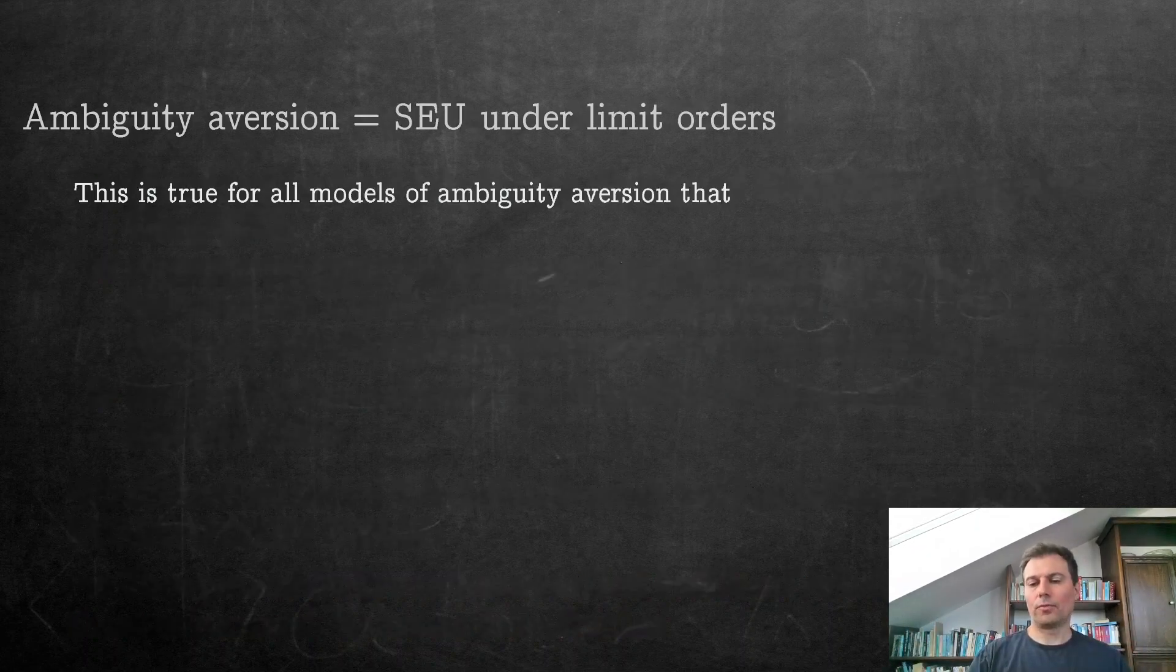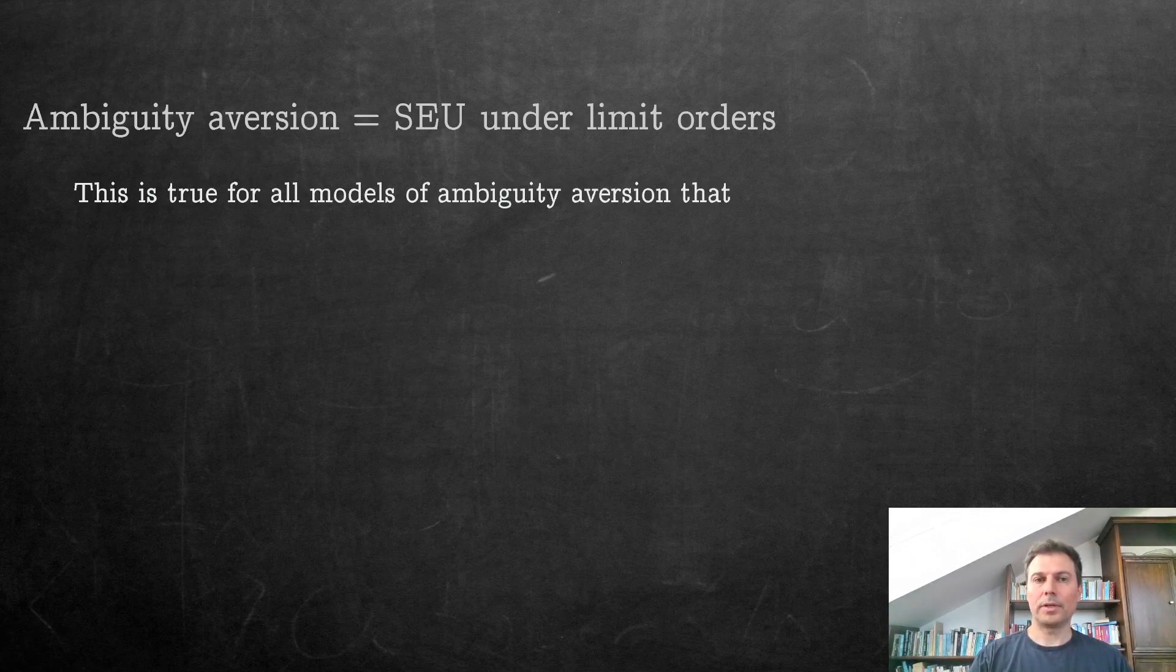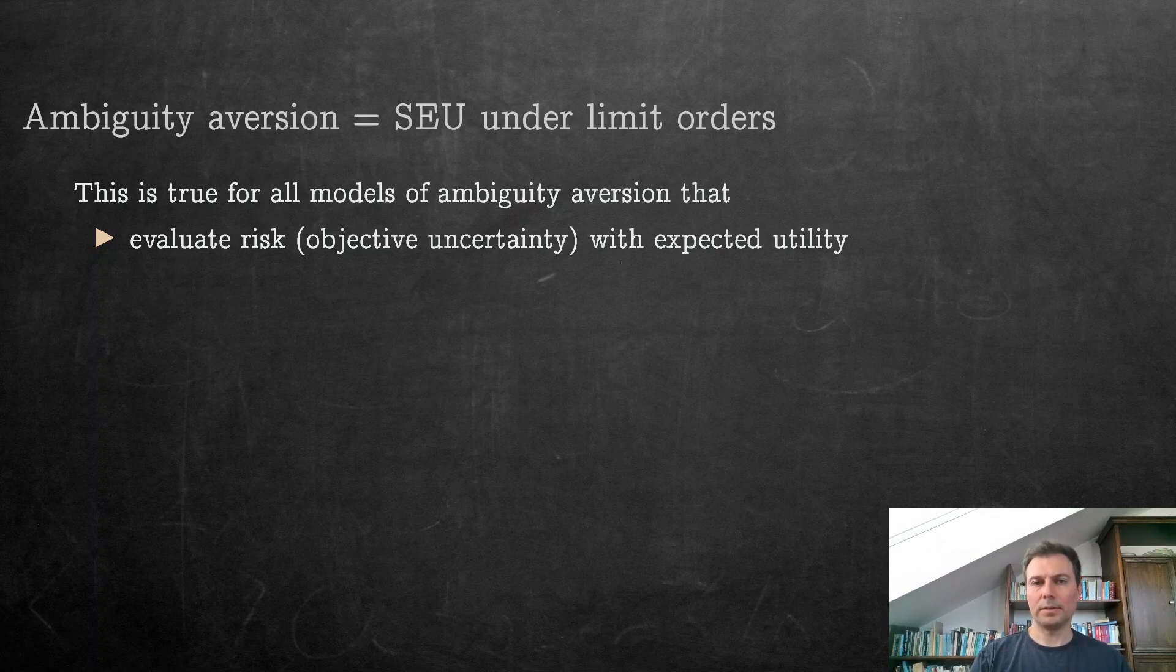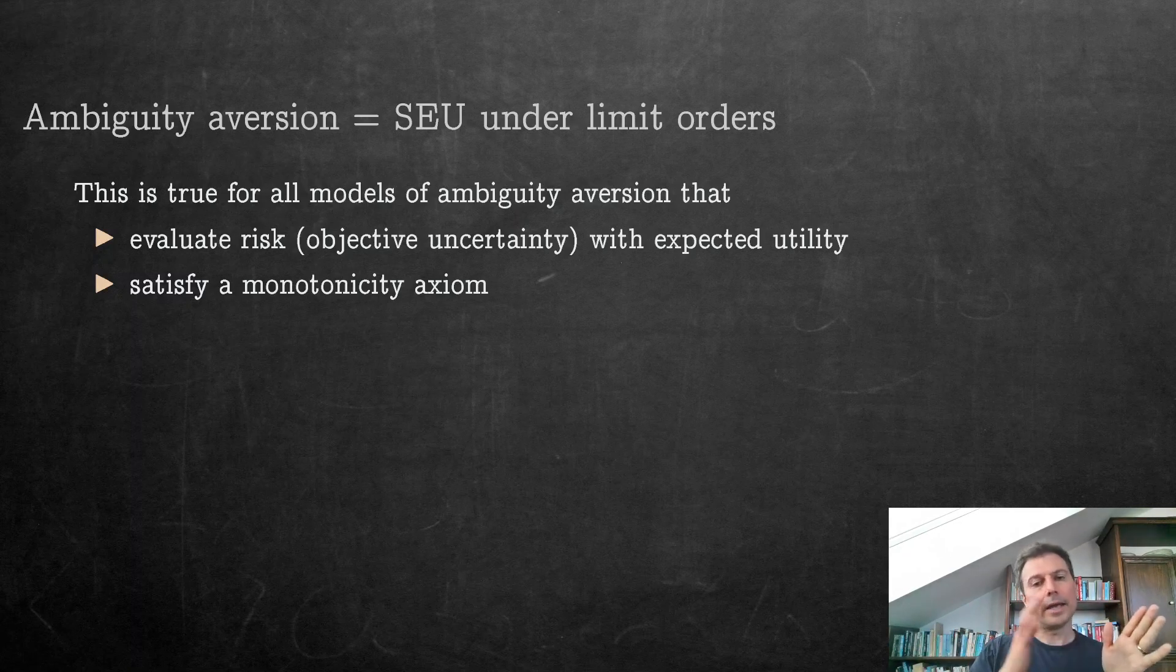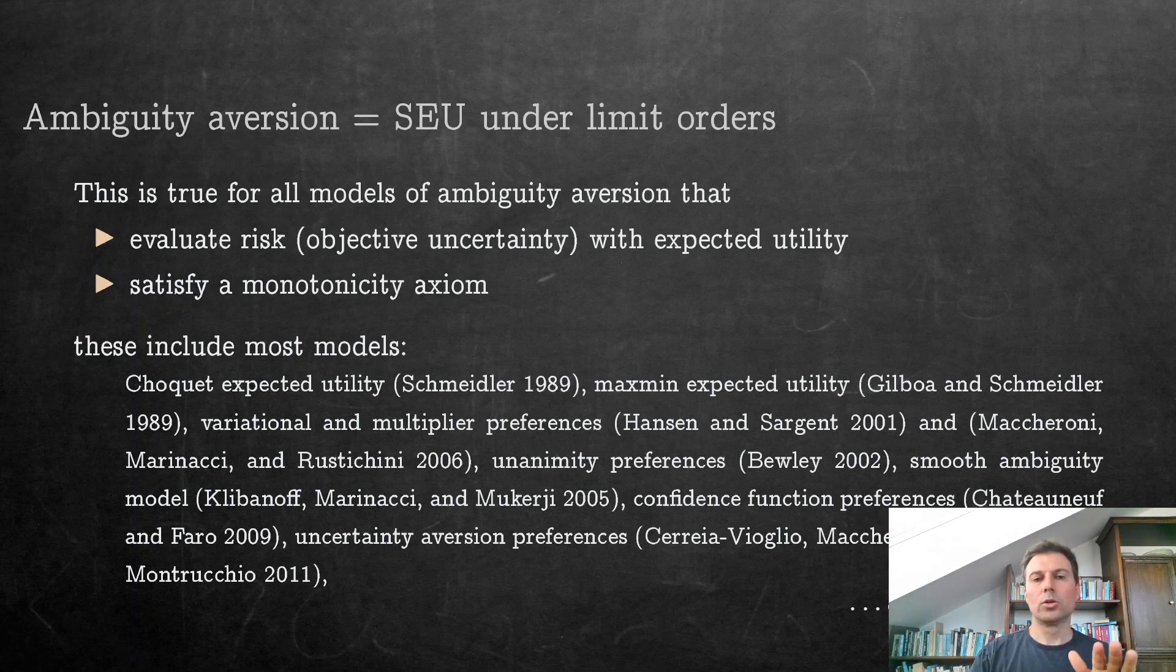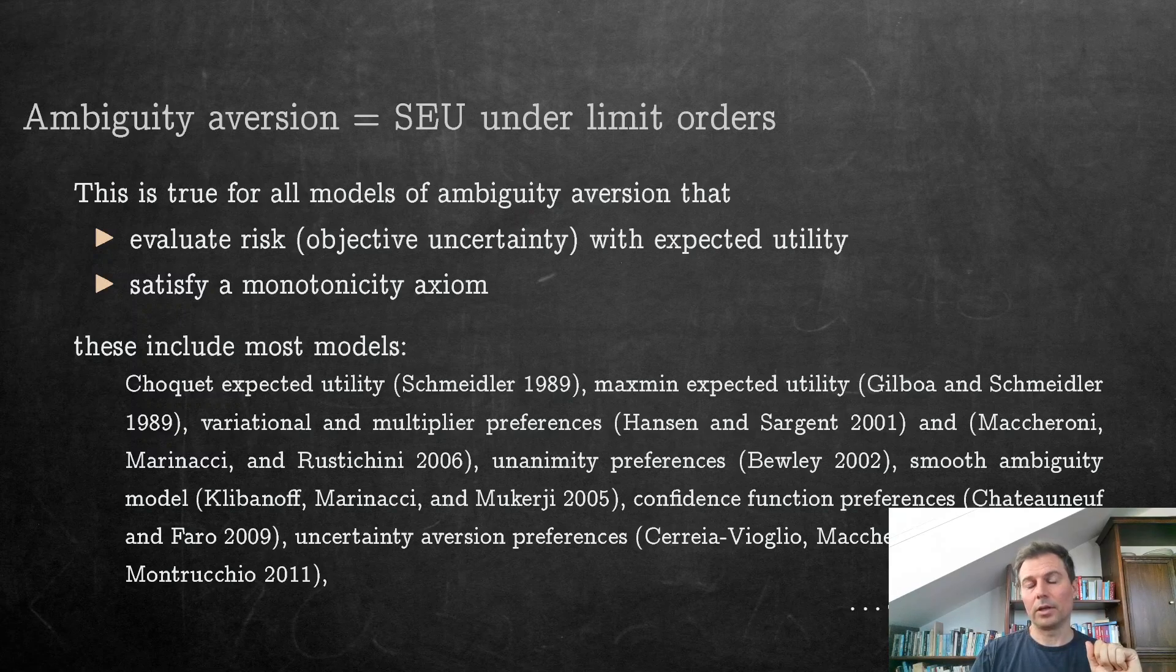So what is the range of what we cover in our paper? This result that ambiguity aversion is the same as subjective expected utility under limit orders is true for all models of ambiguity aversion that satisfy two things: One is that they evaluate risk with expected utility, and secondly, they satisfy a sort of monotonicity or dominance axiom. So if there are two choices and one dominates another in every state of the world, then the latter cannot be chosen.